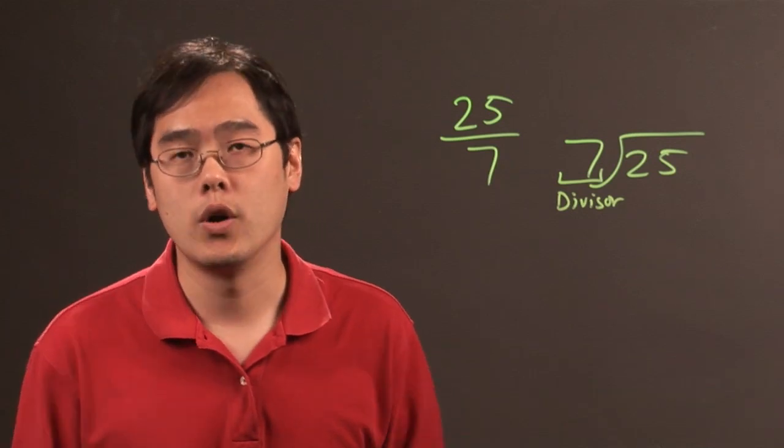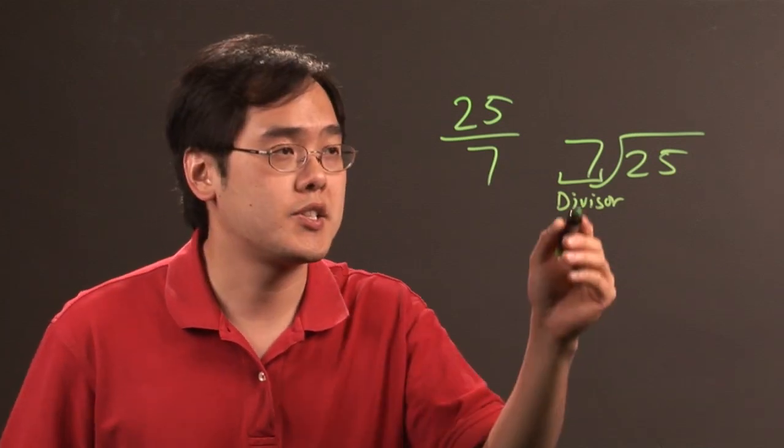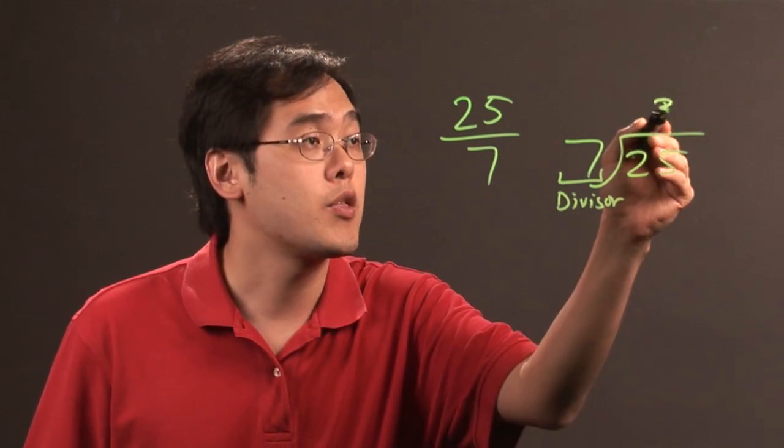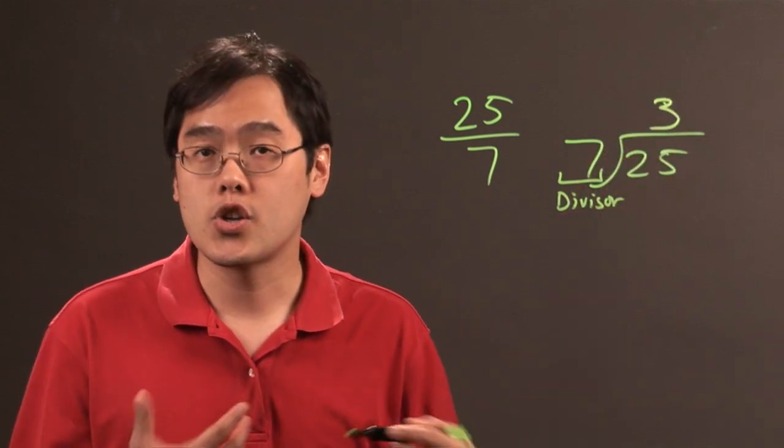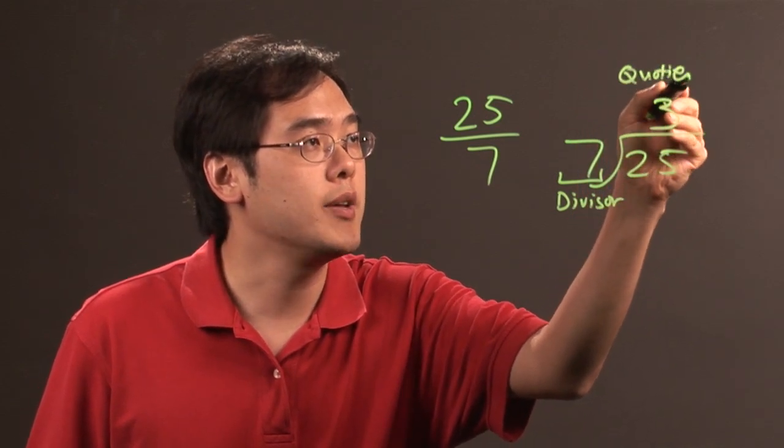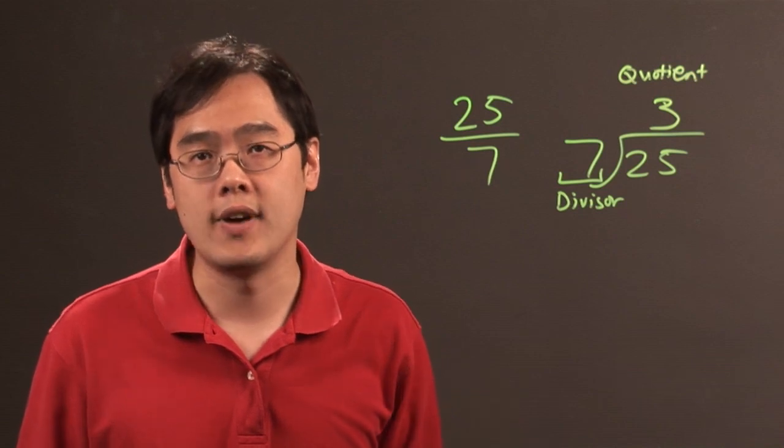Now the rest of the terms will come as they may. Now let's talk about 7 goes into 25. You know 7 goes into 25 three times. Now the start of the answer, the 3, is an example of what a quotient will be. So the quotient is going to be the number that you get after you divide.